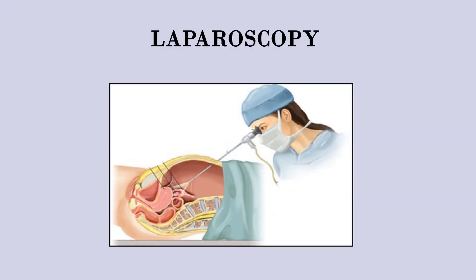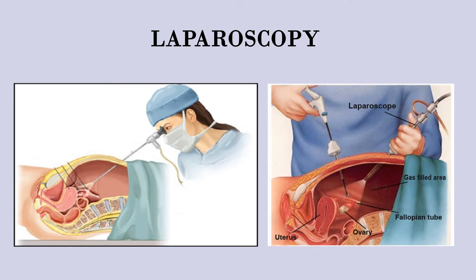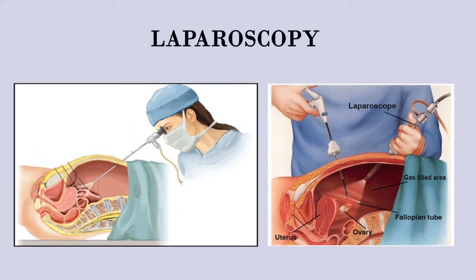More complex tests include laparoscopy. If the doctor suspects ovarian or fallopian tube scarring or endometriosis, a woman may undergo a laparoscopy. The doctor makes two small incisions, injects carbon dioxide gas into the stomach to enlarge it, then inserts a laparoscope into one incision and a long probe through the other to view the ovaries, fallopian tubes, and uterus for scar tissue.